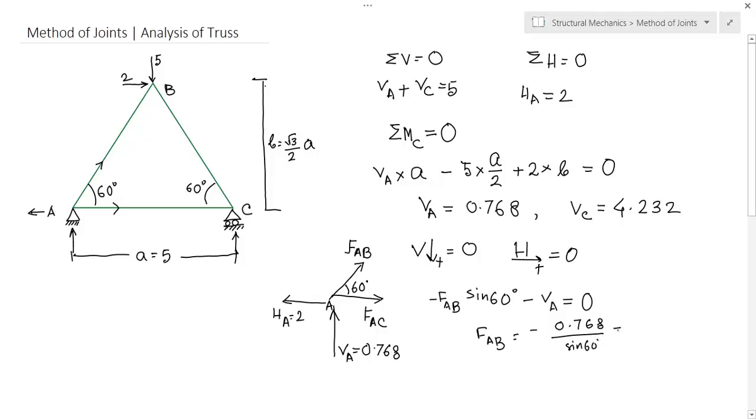That is minus of 0.768 by sine 60. It will come out as minus 0.887. As you are taking the tensile is positive but you are getting negative forces, it means it is compressive force.